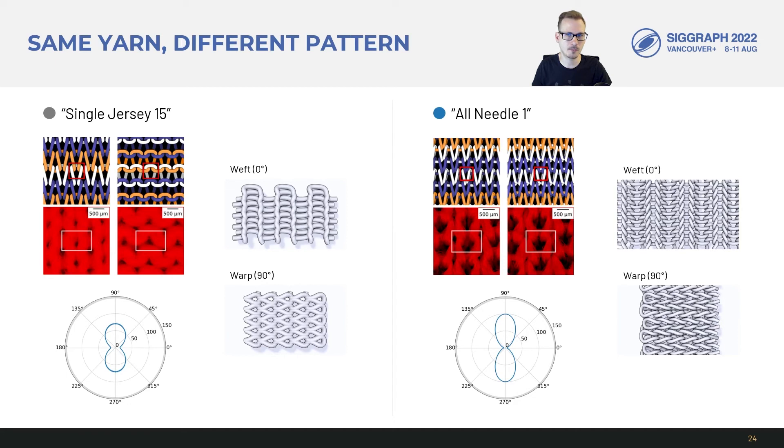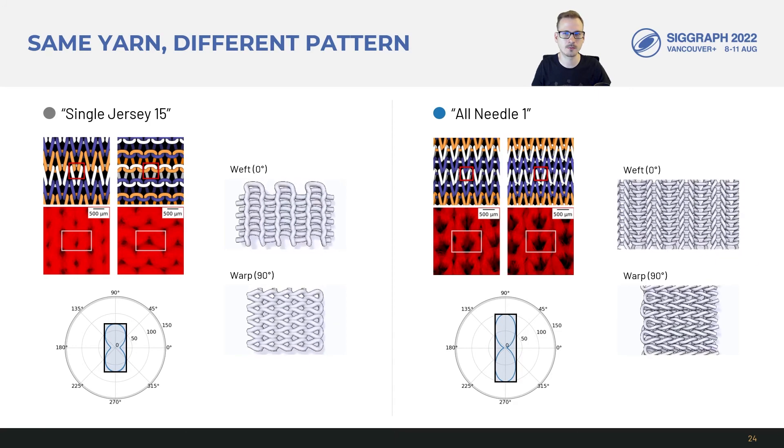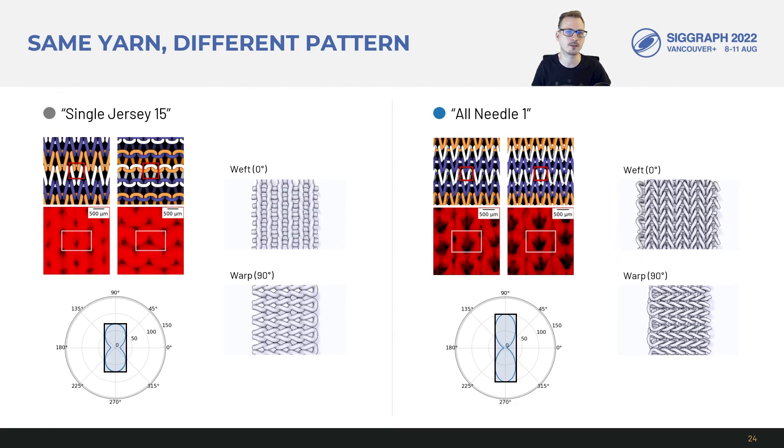Now we compare to a fabric with the same polyester only yarn but change up the yarn pattern to all needle instead. In the stiffness plots we see this affects the anisotropy. Specifically the all needle has a more pronounced difference between stiffness along 0 degrees versus along 90 degrees. In the animations we compare the stretching of the different topologies in action.